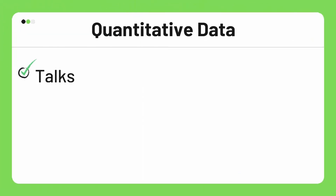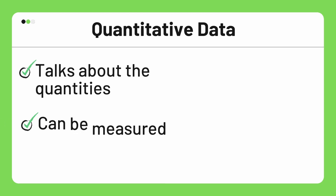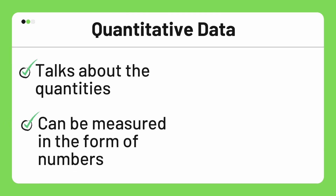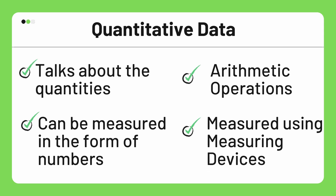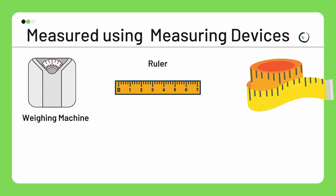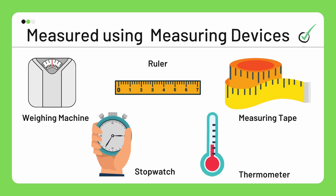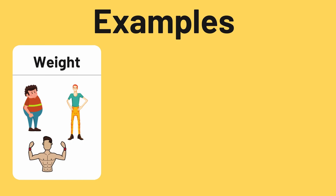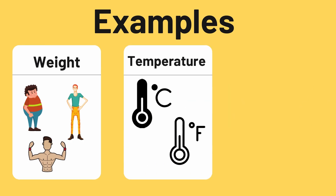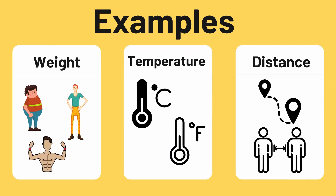Quantitative data talks about quantities, which means it is something we can measure in the form of numbers. Since it is represented by numbers, arithmetic operations can be easily performed on it. Quantitative data is generally measured using different instruments like a weighing machine, ruler, measuring tape, stopwatch, thermometer, etc. It is also known as numerical data. Examples include the weight of students in a class, temperature in degrees Celsius or Fahrenheit, or distance between different cities.